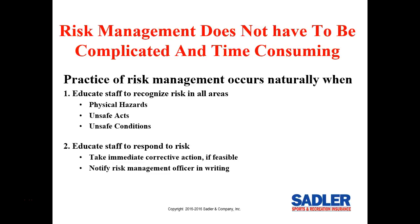The practice of risk management in the sports setting is as simple as educating staff on how to recognize the most common areas of risk, such as physical hazards, unsafe acts and conditions, and how to respond to them. The response requires both taking immediate corrective action, if feasible, and notifying the risk management officer in writing. For example, if an exposed sprinkler head is found during a soccer practice, the coach should immediately put a cone over it, resume practice, and notify the risk management officer in writing.